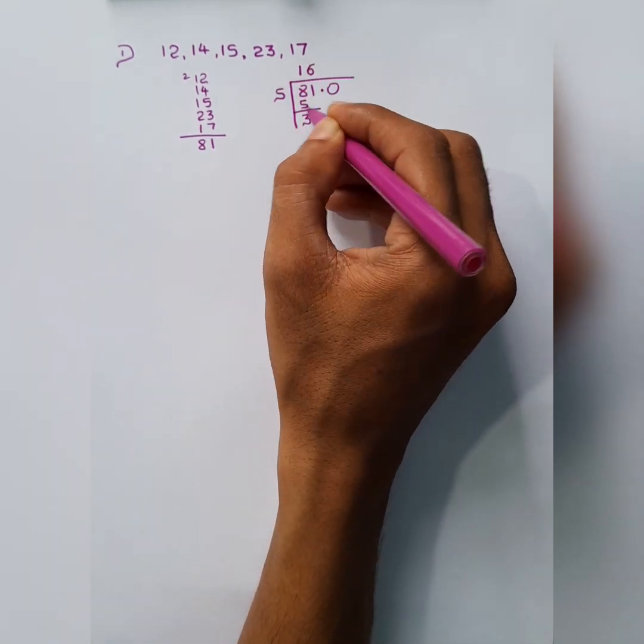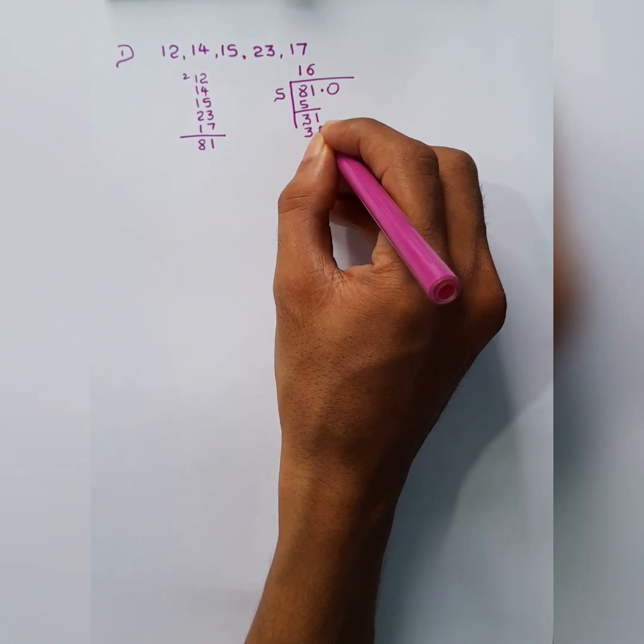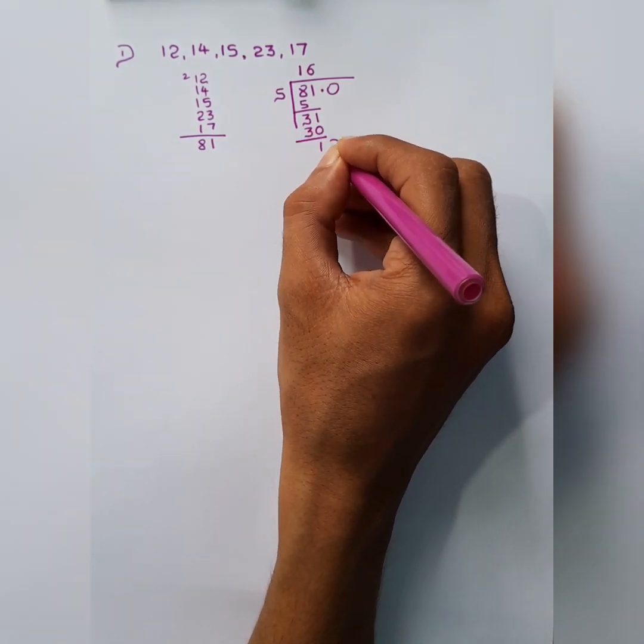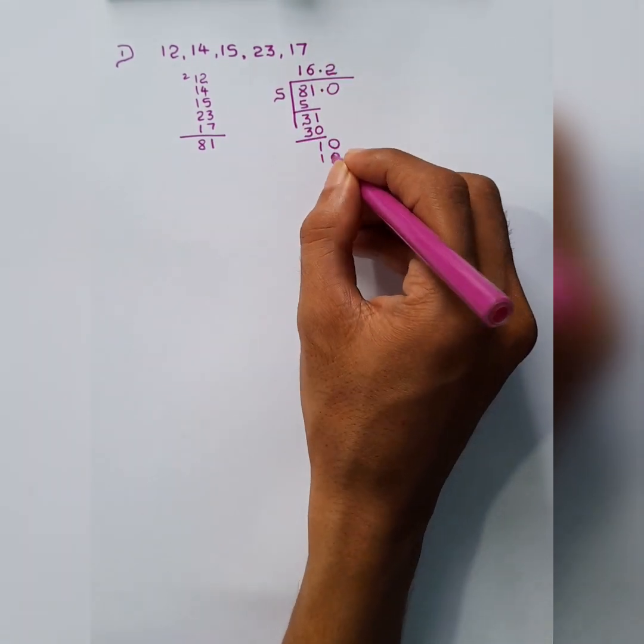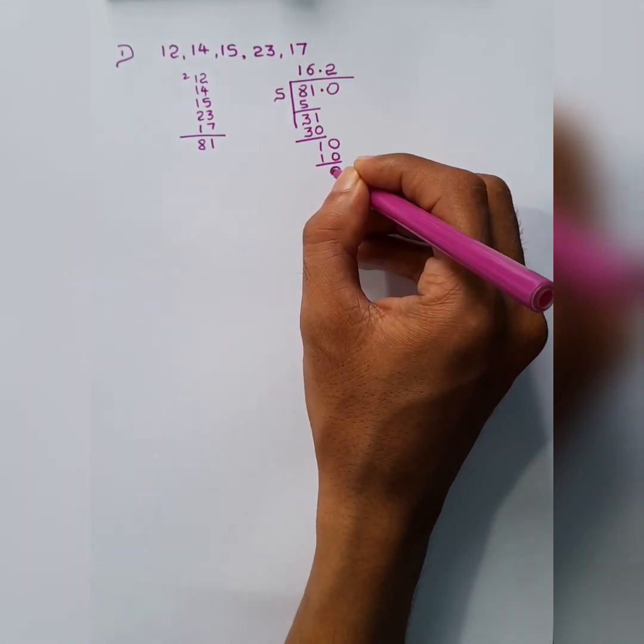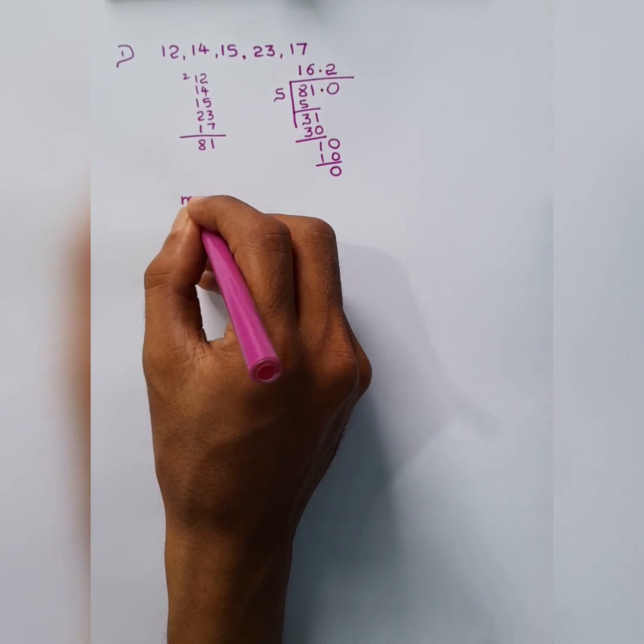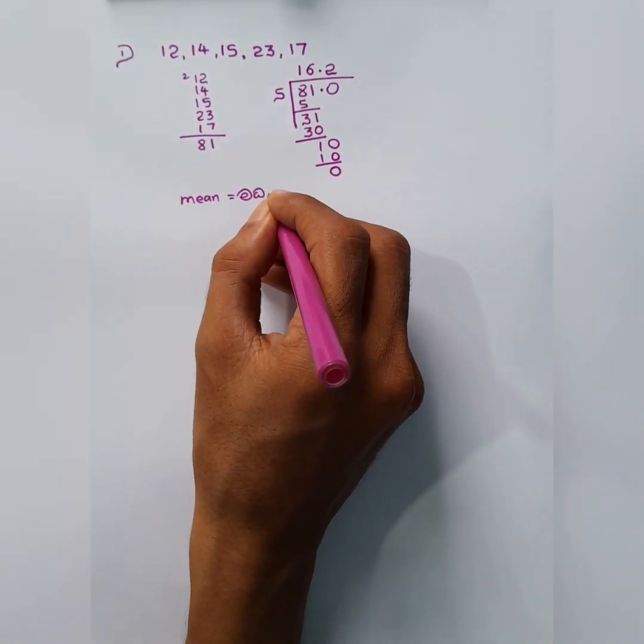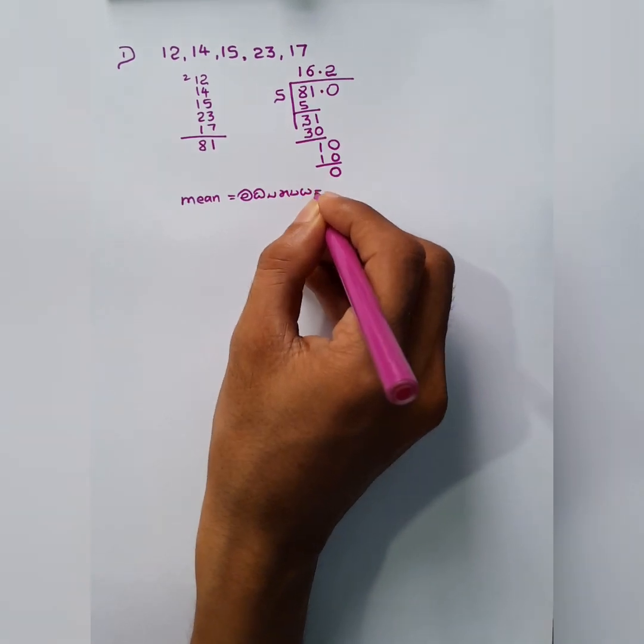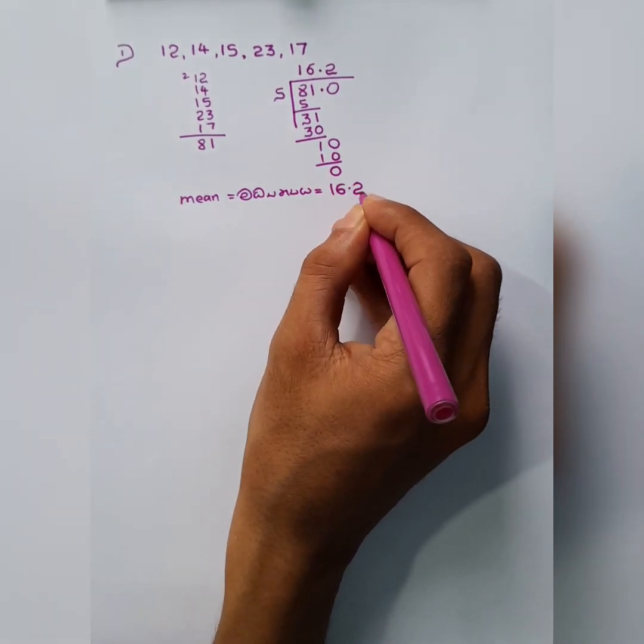And 6 times 30. And in 10, how many are there? 2. So 2 times 10. No balance. So the mean is 16.2.